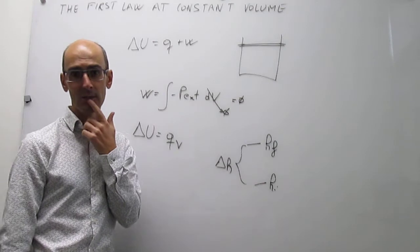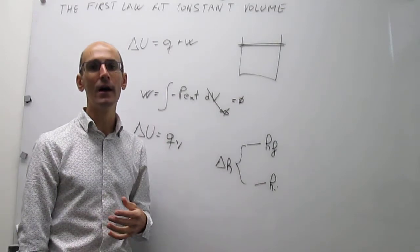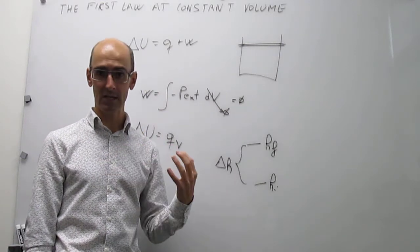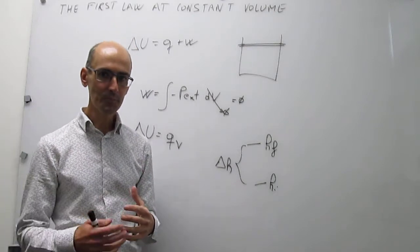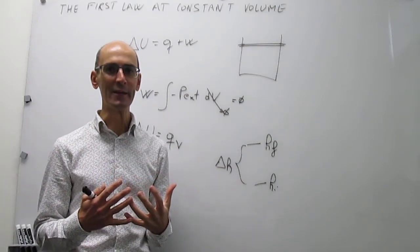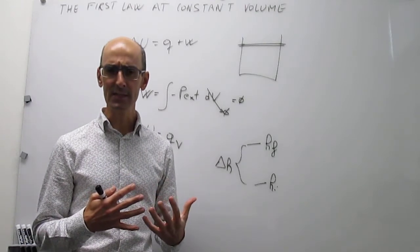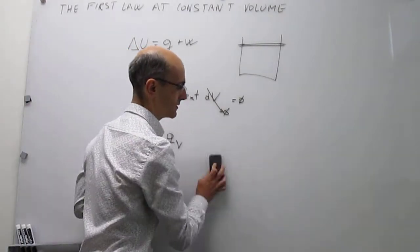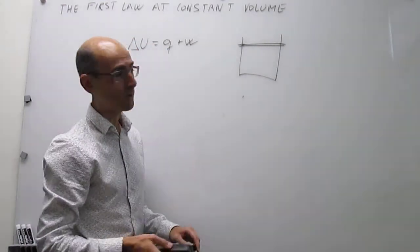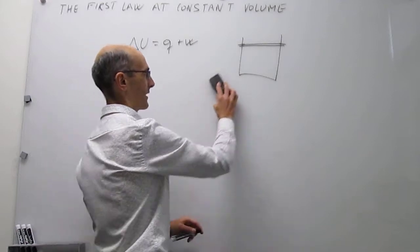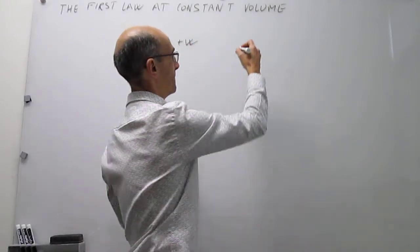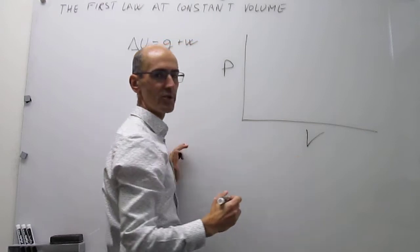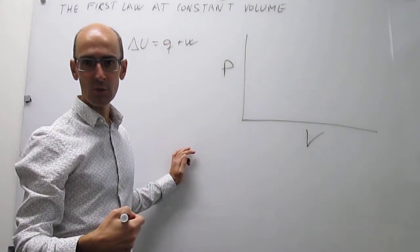The internal energy is actually a state function. It really doesn't matter what the process is — if the initial point and the final point are the same, the change in internal energy will be the same. State functions have really interesting properties, which we're going to begin to see in the remainder of this video. We're going to illustrate what happens to state functions in a cycle — a thermodynamic cycle for a gas in which we take the gas along a pathway that will finally return it to the initial state.